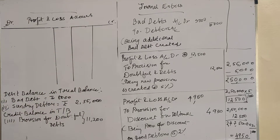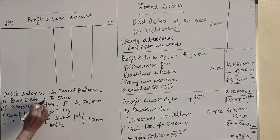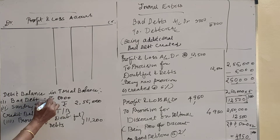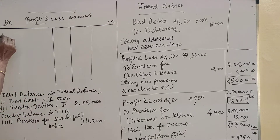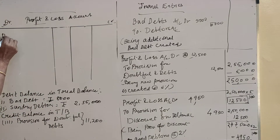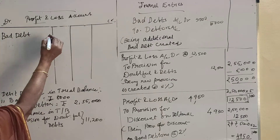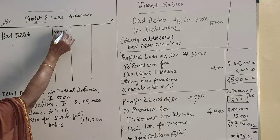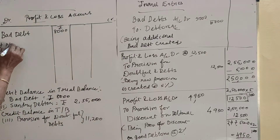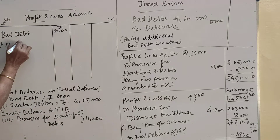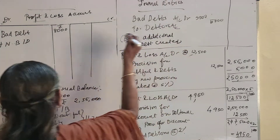First, let us take the bad debt as per the trial balance. Bad debt given in the trial balance is 8,000. That means old bad debt is equal to 8,000, plus new bad debt — which one is the new bad debt? This is the new bad debt: 5,000.